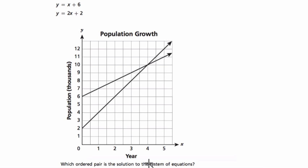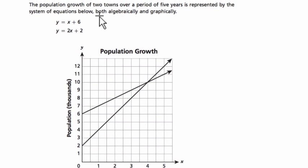All right, so let's read the question together. It says the population growth of two towns over a period of five years is represented by the system of equations below, both algebraically—so here's our system. A system, of course, is a collection of equations, and here's the graphical representation. So we have the algebra and we have the graph.